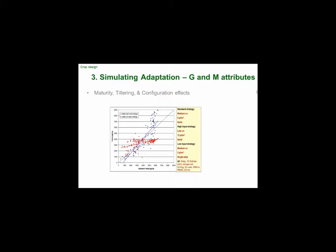Here's a simulation example: simulated yield against a standard — a medium maturing cultivar, five plants per metre squared, 50,000 per hectare, planted in metre rows. The blue dots are a high input strategy — late maturing, high density — and you can see that in a really high yielding year that gives you a great kick up, but in a poor year it crashes. With a low input strategy — similar maturity cultivar but lower density going out into skip rows — you do much better in poor years but lose the advantage in good years. Classic G by E trade-off.